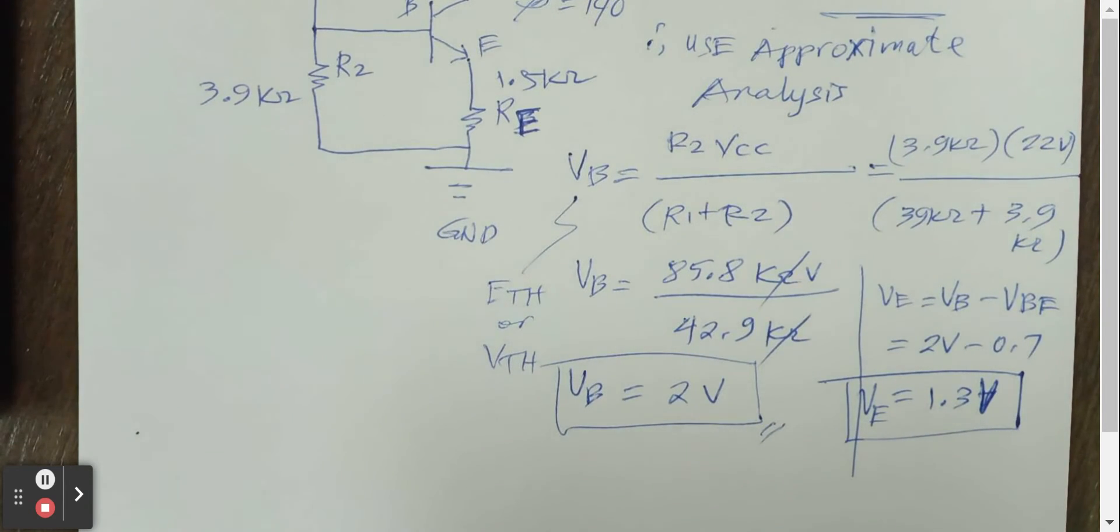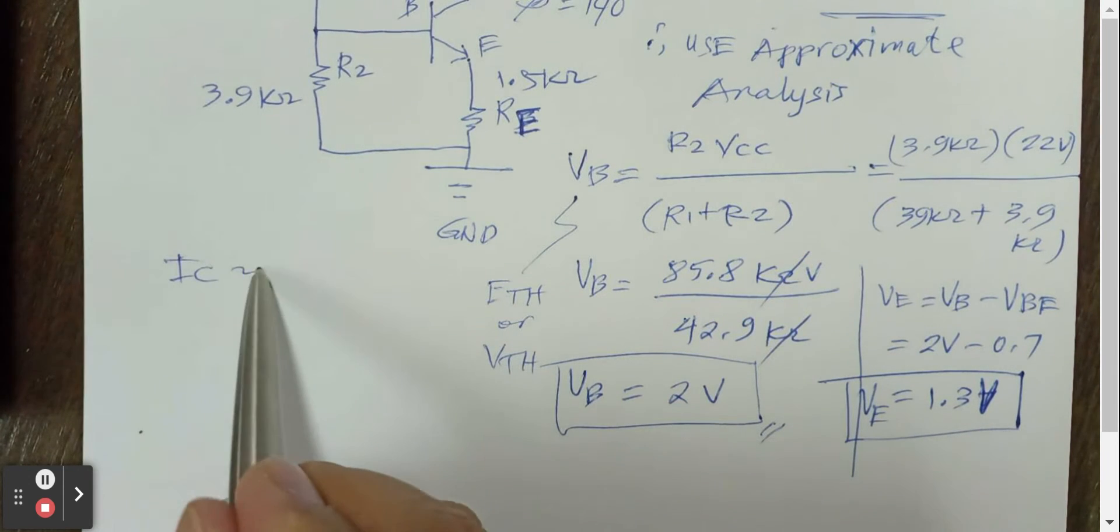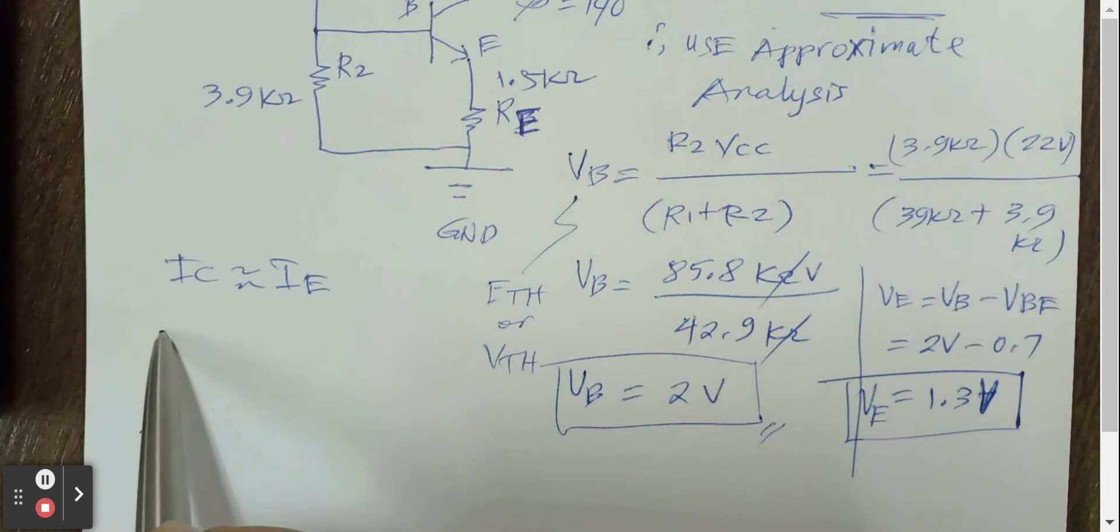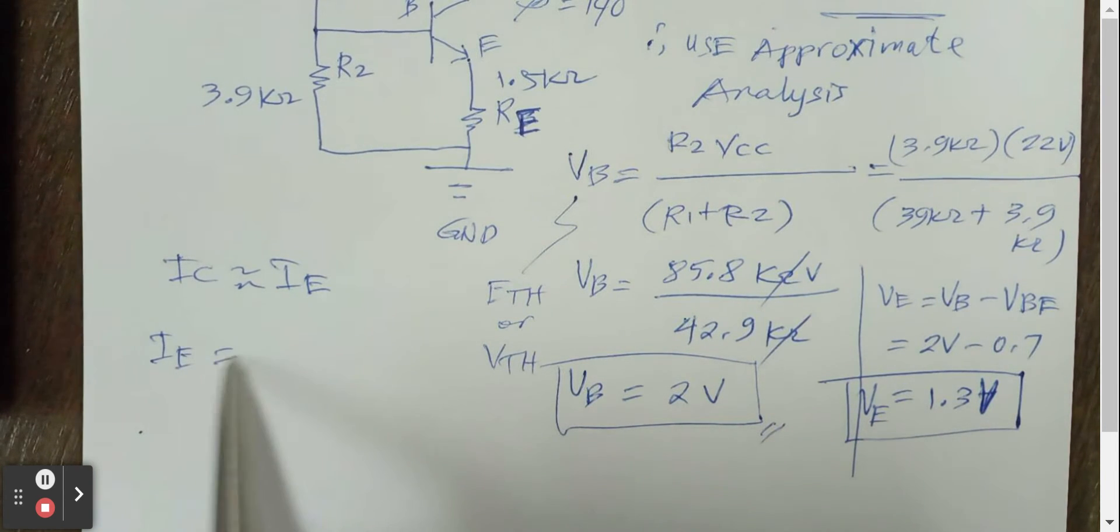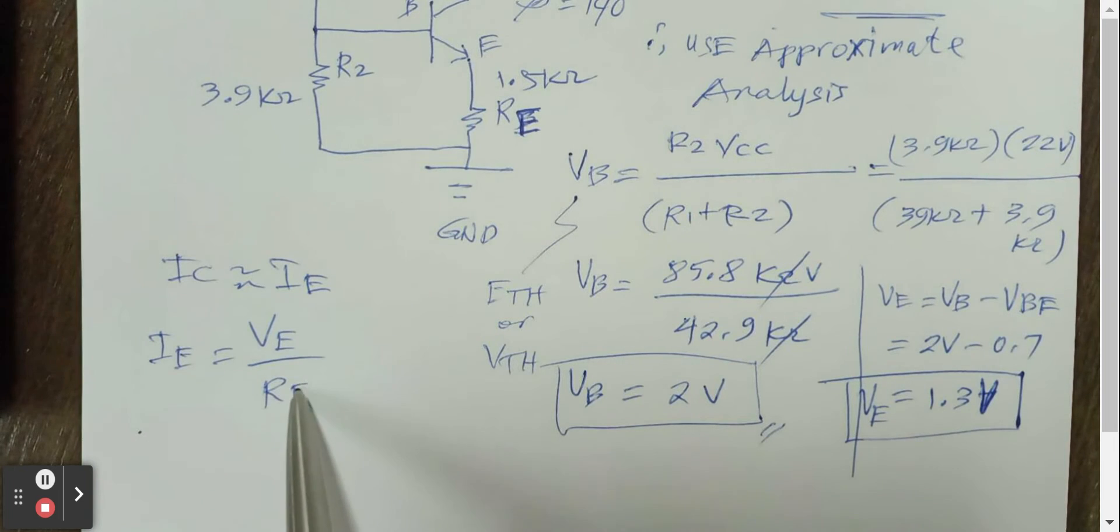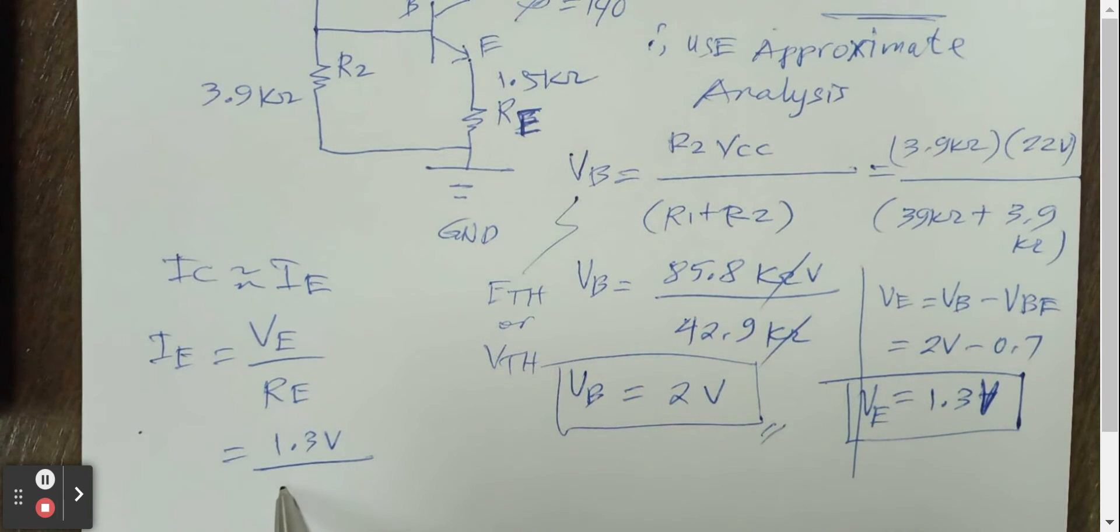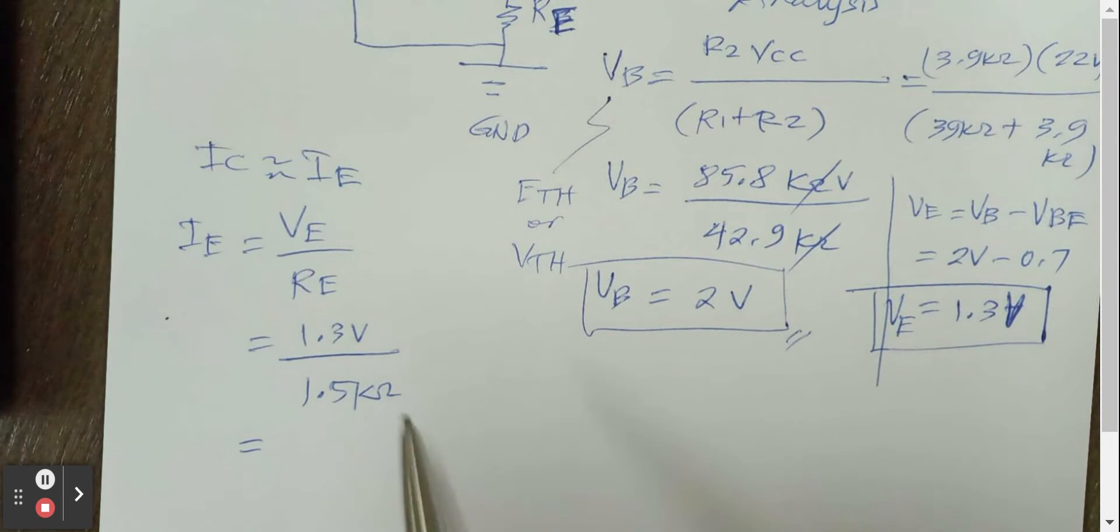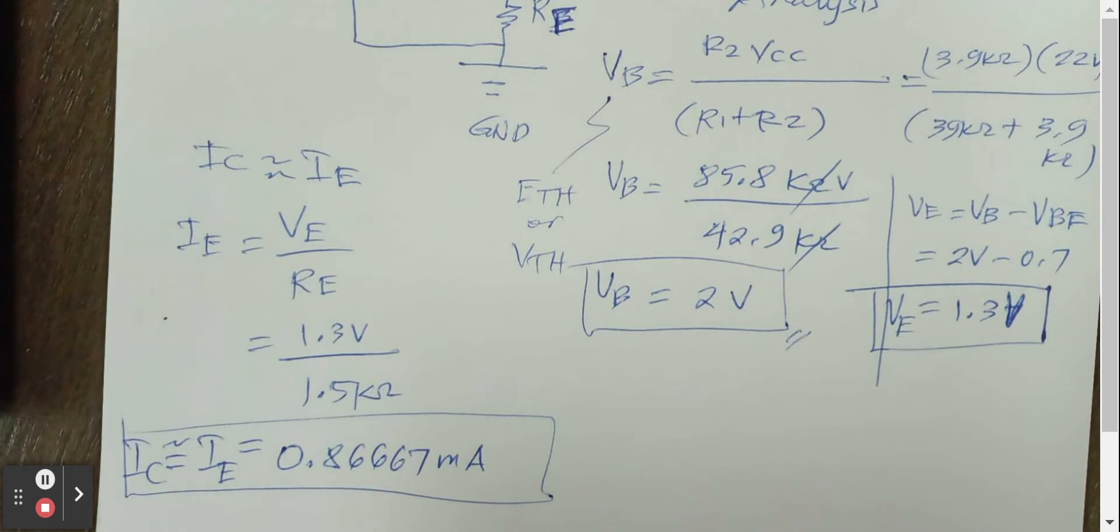And then after that, we can assume that Ic is approximately equal to Ie. So if I want to calculate Ie, this will be Ve over Re. We will get an answer of 1.3 volts divided by 1.5 kilo ohms. And our answer here will be 0.86667 milliamperes. That will be our Ie, which is also approximately our Ic.